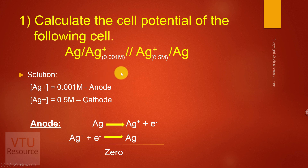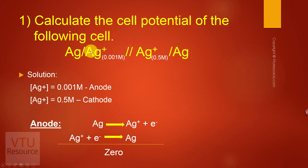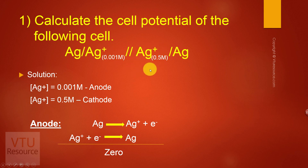Lower concentration electrolyte acts as anode; higher concentration electrolyte acts as cathode. If the cell representation is given, it is clear that the left-hand side of the salt bridge acts as anode and the right-hand side acts as cathode. If cell representation is not given and only concentrations are given, then lower concentration acts as anode and higher concentration acts as cathode.